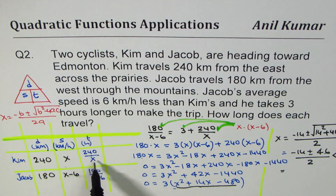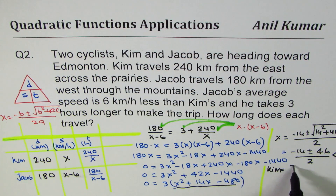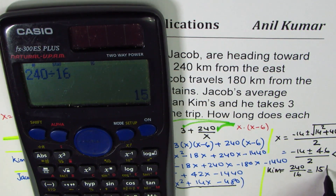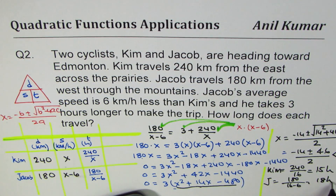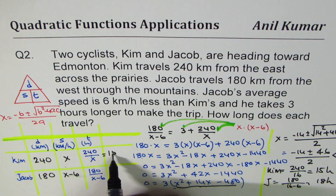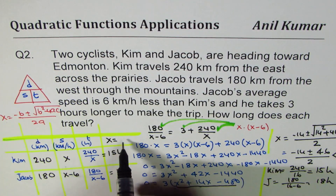If x is 16, we can find the time for each cyclist. Kim's time is 240 divided by 16, which is 15 hours. Jacob's time is 180 divided by (16 minus 6), which is 180 divided by 10, giving 18 hours. That makes sense — Jacob takes 3 hours more than Kim. So Kim travels for 15 hours and Jacob travels for 18 hours.